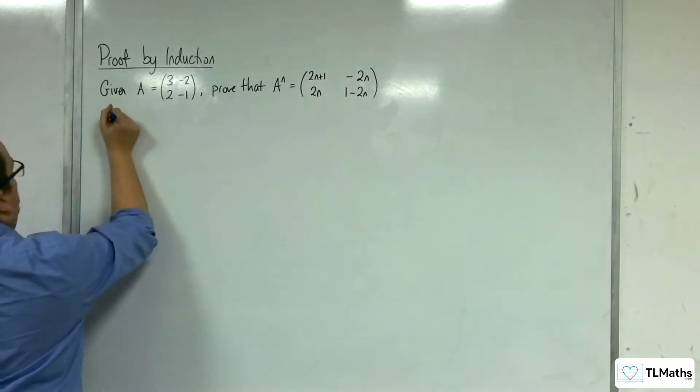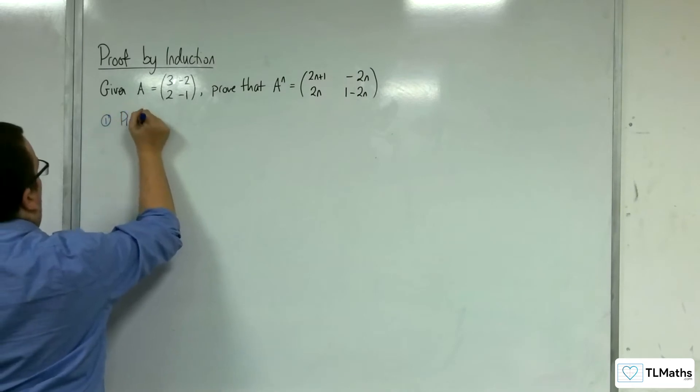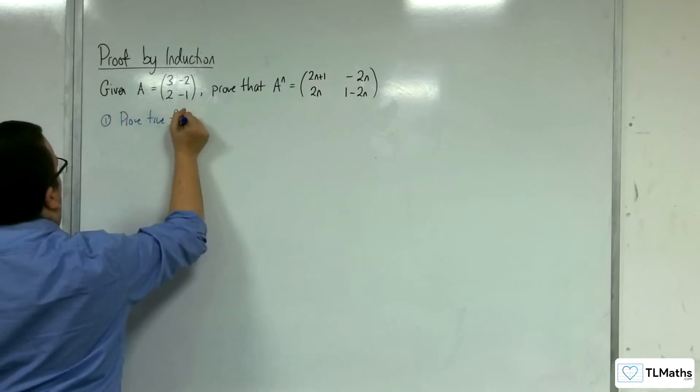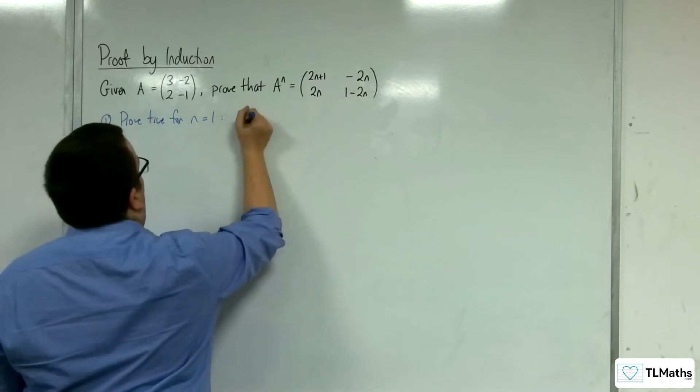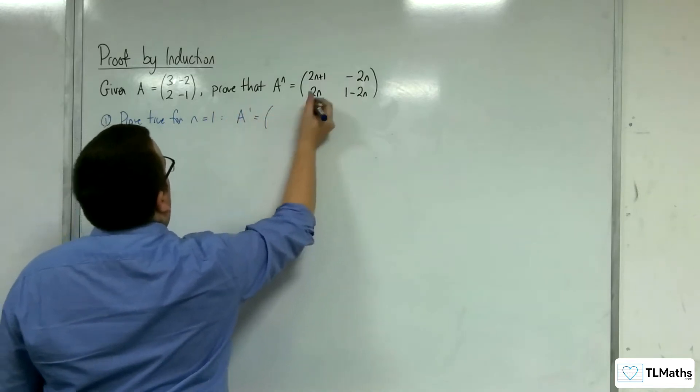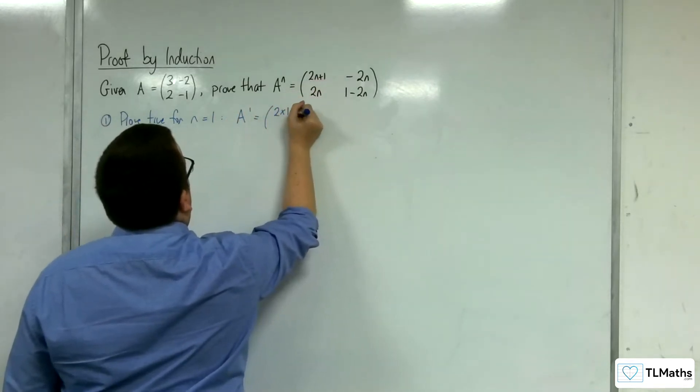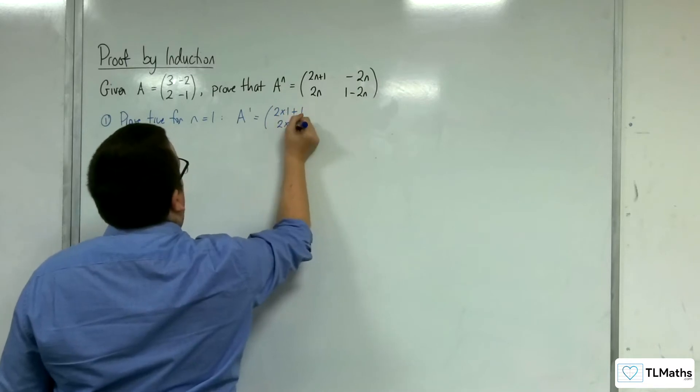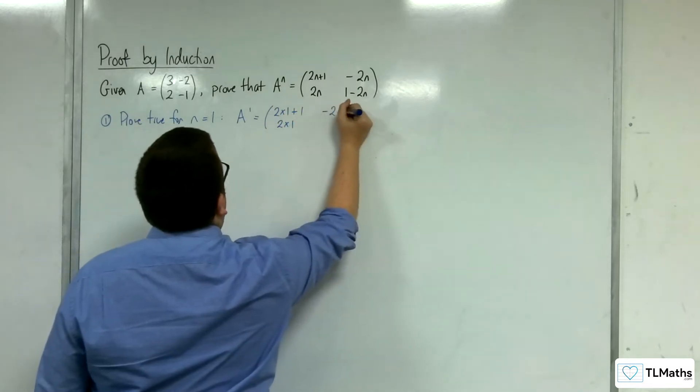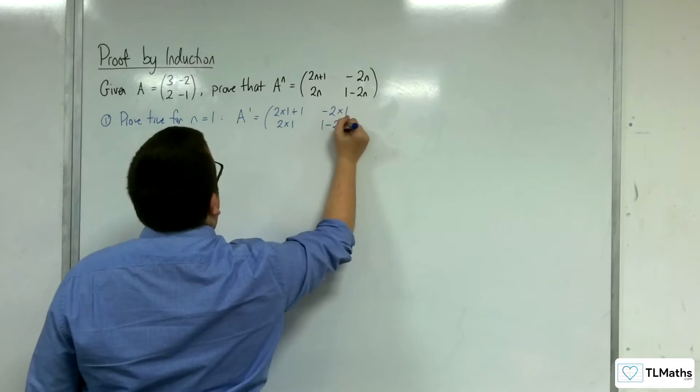Stage 1, prove true for n equals 1. So A^1 is (2×1+1, 2×1; -2×1, 1-2×1).